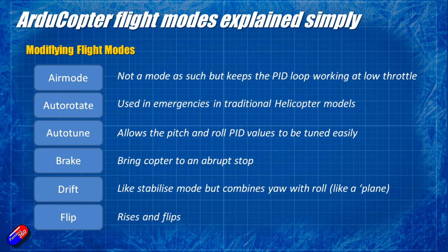Air mode works the same here as in Betaflight and INAV — it keeps the PID loop working even when the throttle is at low position, so if you're flying in acro you'll want air mode enabled to ensure flips and rolls are easy because the motors are always turning. Autorotate is a special mode used for helicopter models only, allowing you to land when there's a motor problem using stored energy in the rotors. Autotune is something you'll use at least once, probably on the maiden flight, to get the PID values for pitch and roll spot on — it makes tuning super easy. I wish Betaflight had this ability.